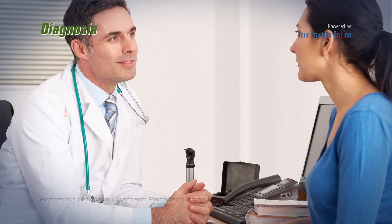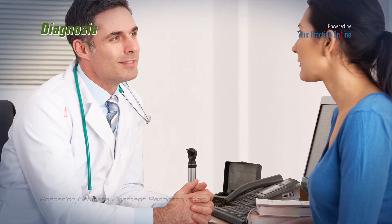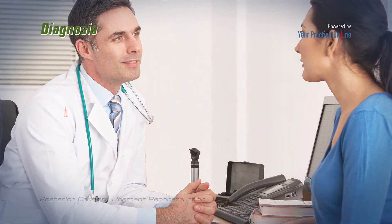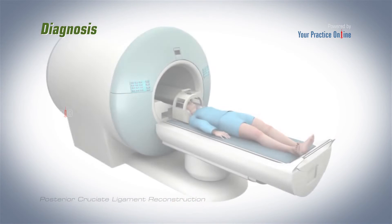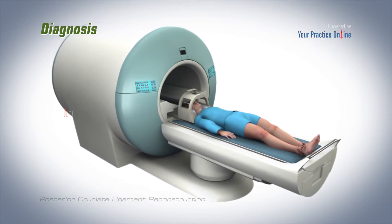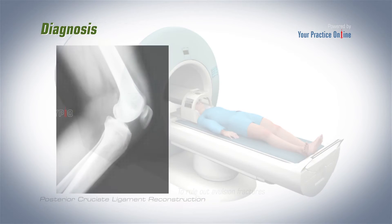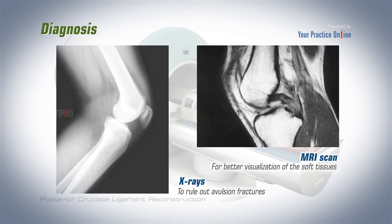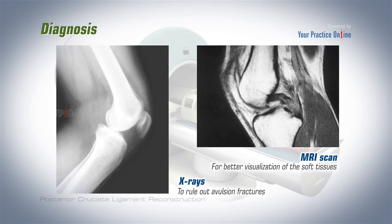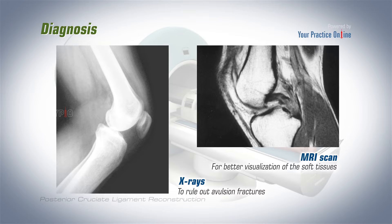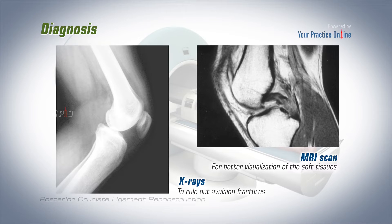Diagnosis of a PCL injury is made on the basis of symptoms, medical history, and physical examination of the knee. The doctor may order a few diagnostic tests, such as X-rays and MRI scan. X-rays are useful to rule out avulsion fractures, where the PCL tears off a piece of bone with it. An MRI scan is done for better visualization of the soft tissues.